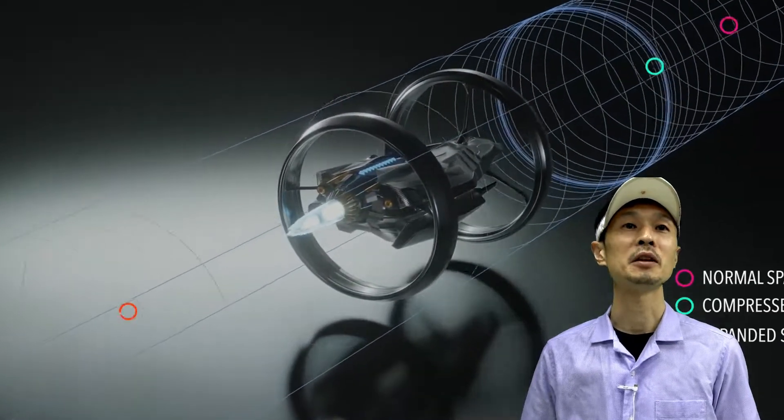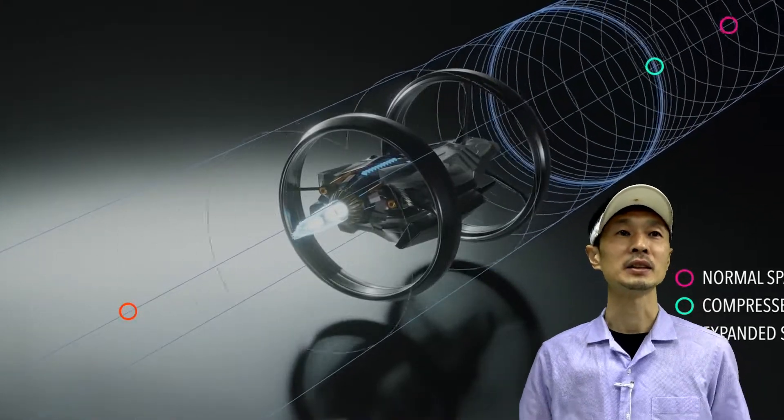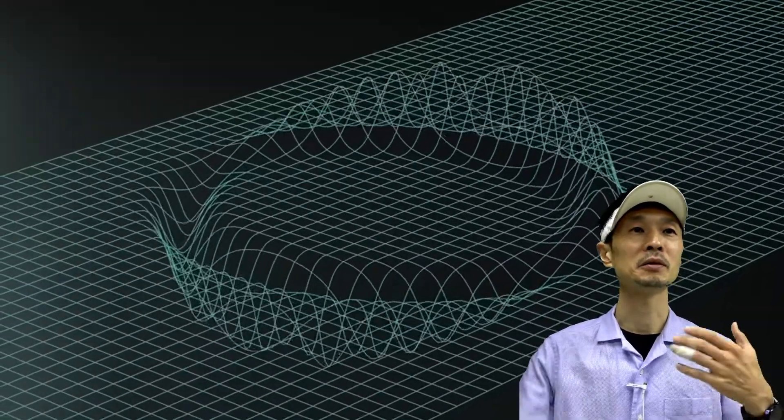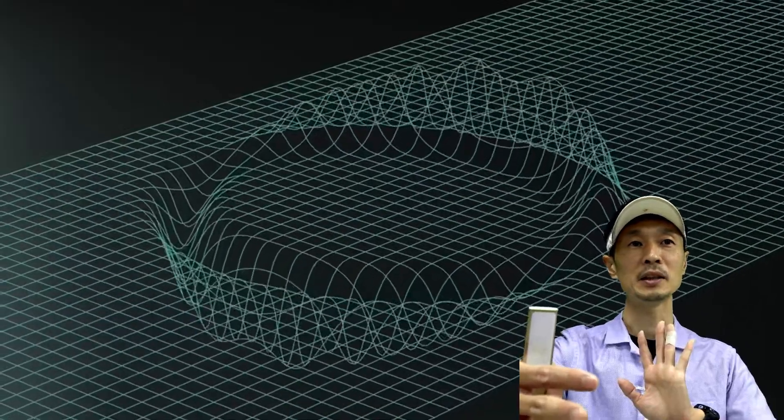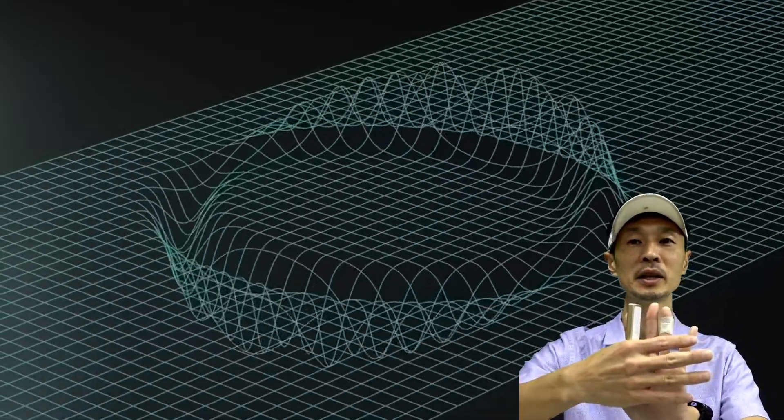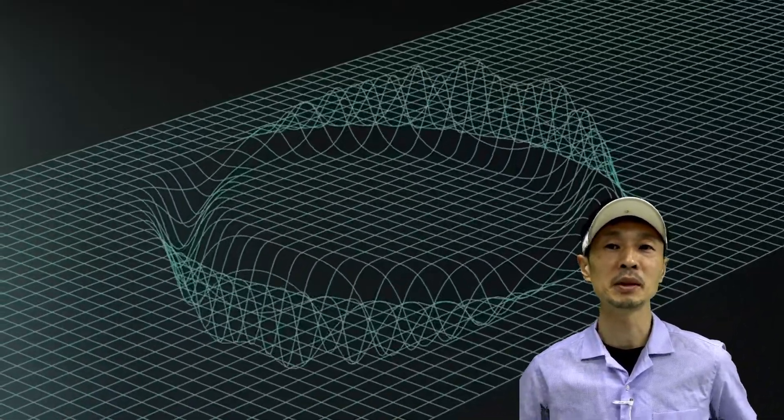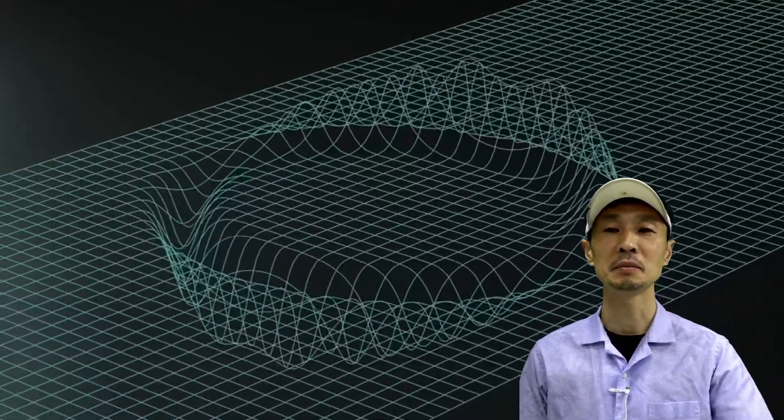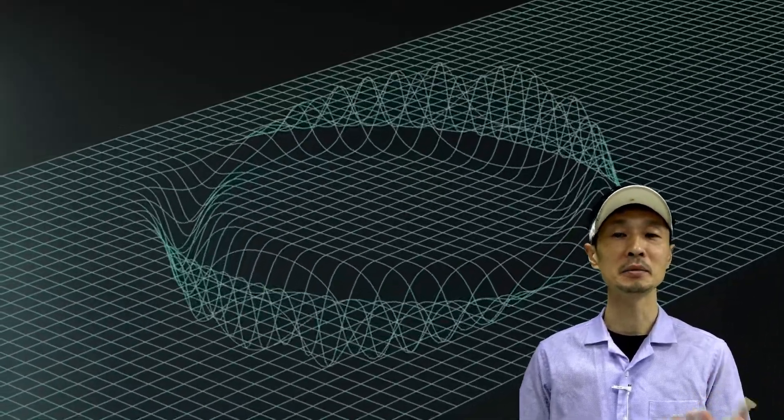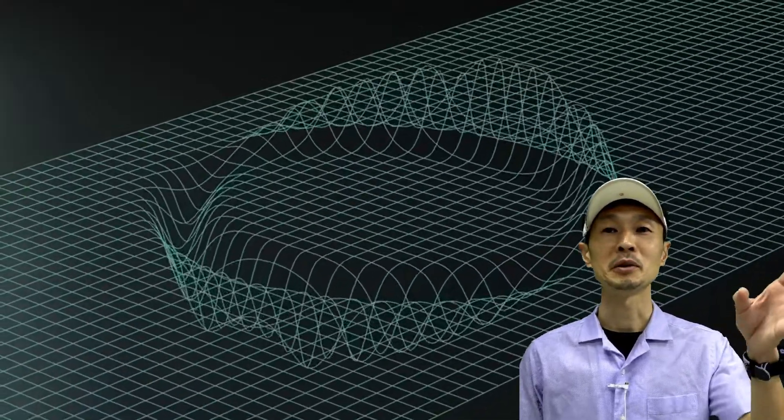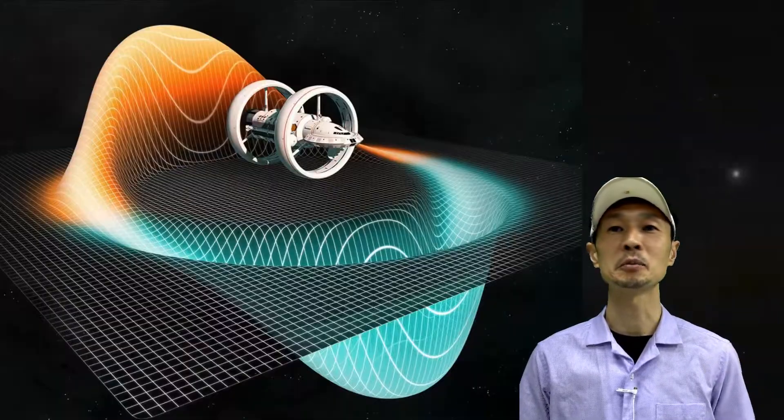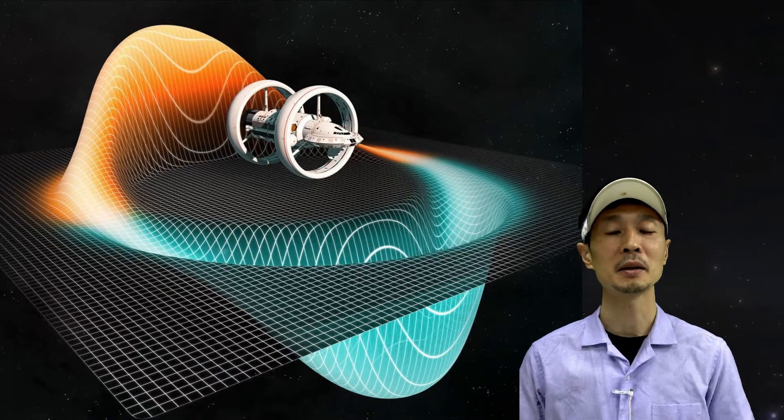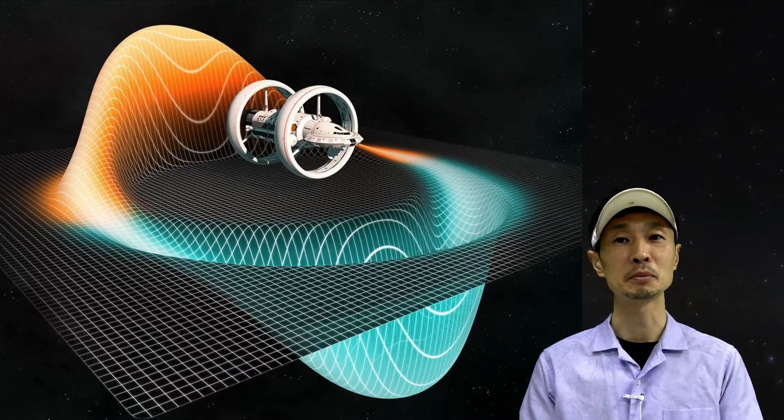If you show the gravitational field in 3D, it looks like this. In front of the spaceship, space shrinks with strong gravity. Behind the spaceship, space is expanded. This allows the spaceship to travel very fast, even faster than the speed of light. This was a revolutionary paper. Alcubierre's warp drive made it mathematically possible to create a warp drive.